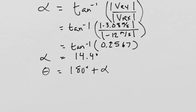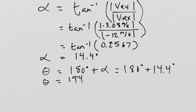So mathematically, our theta ends up being 180 degrees plus our alpha, theta, which is equal to 180 plus 14.4 degrees. Theta will be equal to 194 degrees, or 194.4 degrees.